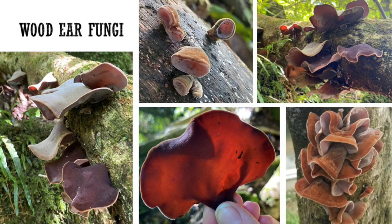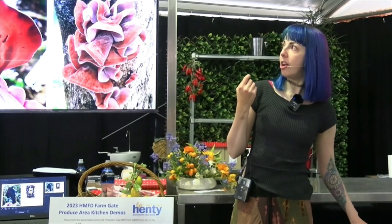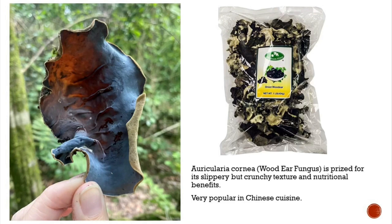Wood ear fungus grows more to the north of here. They grow on wood, and when fresh they are quite soft, pliable, and velvety; when dry, they're crunchy. You can actually buy them from supermarkets, usually called black fungus or dried wood ear. Very popular in Chinese cuisine.